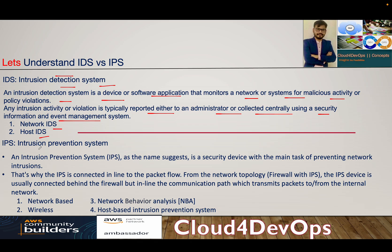IDS works on different types of algorithms. First is signature-based, which looks for specific patterns such as byte sequences in network traffic to detect malicious activity. Second is behavior-based, also called anomaly-based, which works on detecting explosions of malware. Third is reputation-based, which flags suspicious activity at the file level. That is what IDS in general is all about.